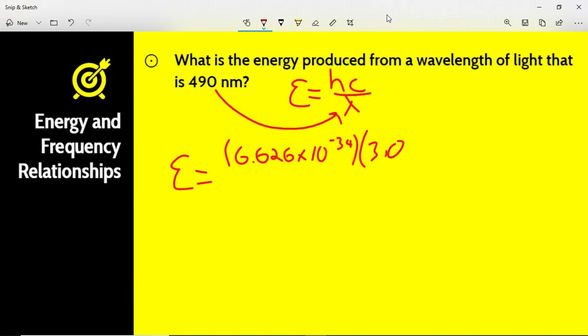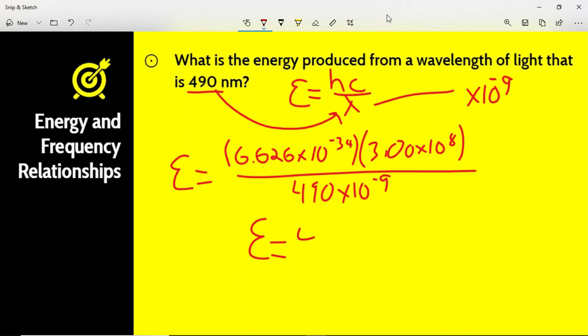Times the speed of light over lambda. Remember we need to convert that to meters. A real easy way to do that is we simply add ×10^-9 to whatever number you get for nanometers. So we just plug in 490×10^-9. We should be able to solve for E. So we plug those numbers into our calculator.